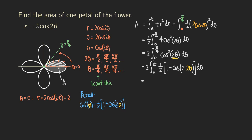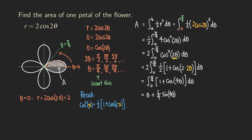Taking the 2 times one half, they cancel each other out, so we have the integral from 0 to pi over 4 of (1 plus cosine 4 theta) d theta. Now the integration is straightforward. Integrating 1 gives theta, and integrating cosine 4 theta gives sine 4 theta. Don't forget to reverse the chain rule: multiply by the reciprocal of the coefficient 4, which is 1 over 4. So we get theta plus (1/4) sine 4 theta, evaluated from 0 to pi over 4.